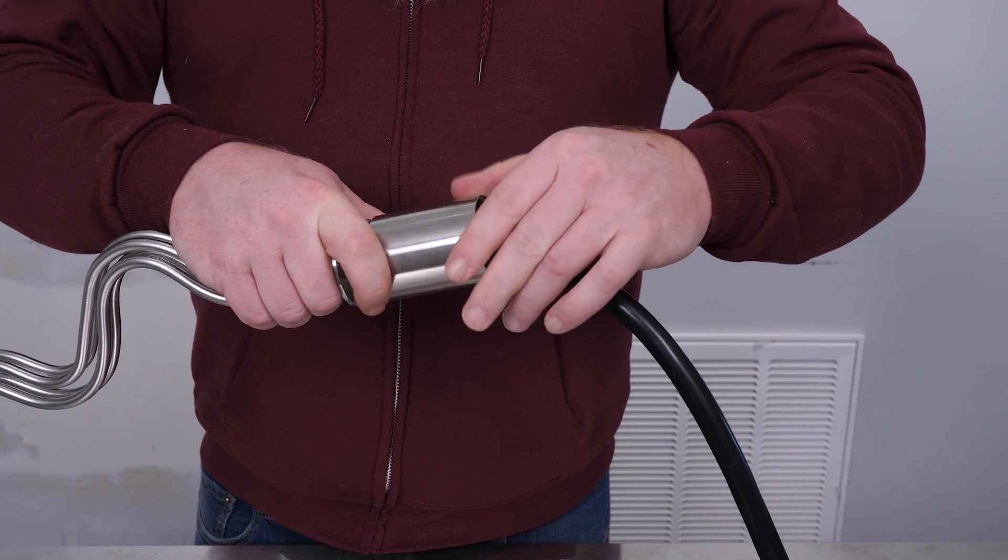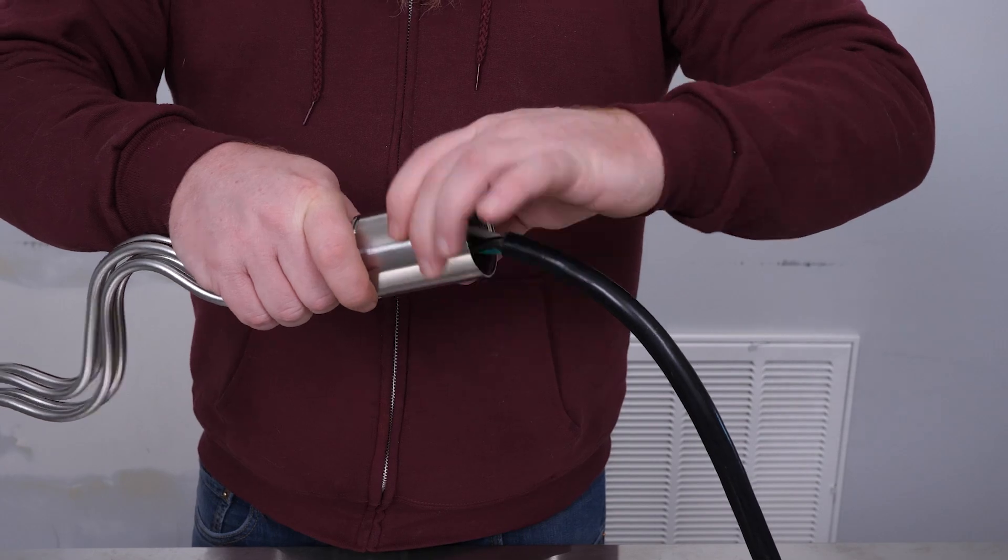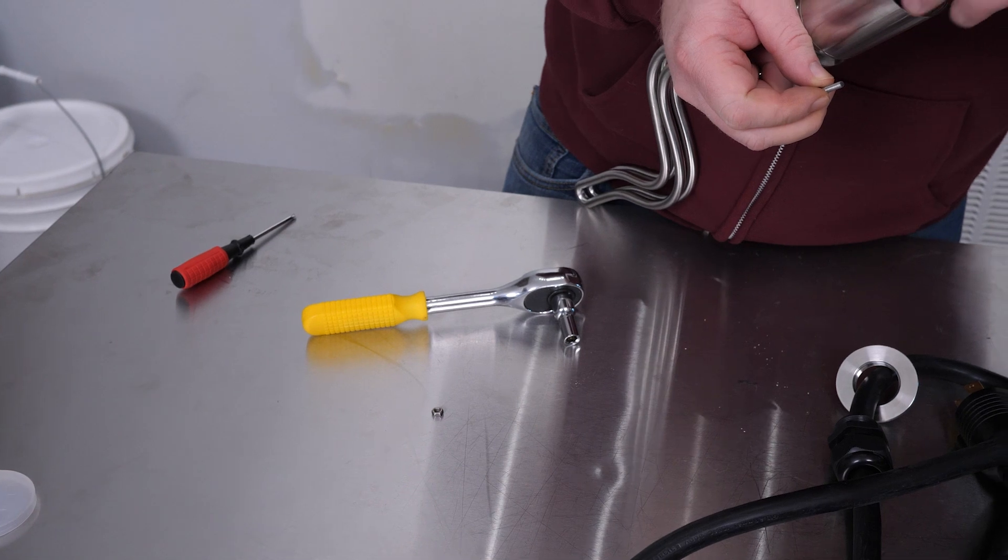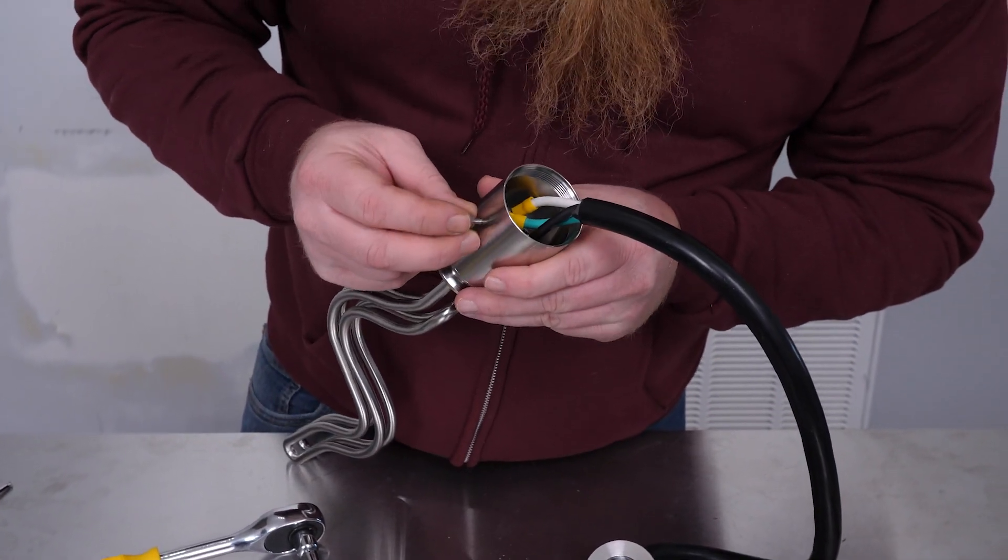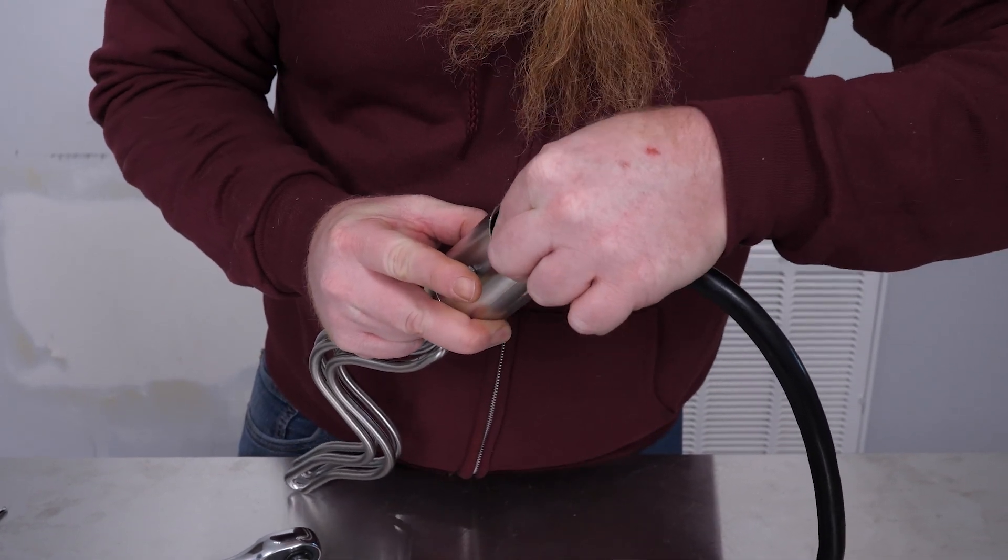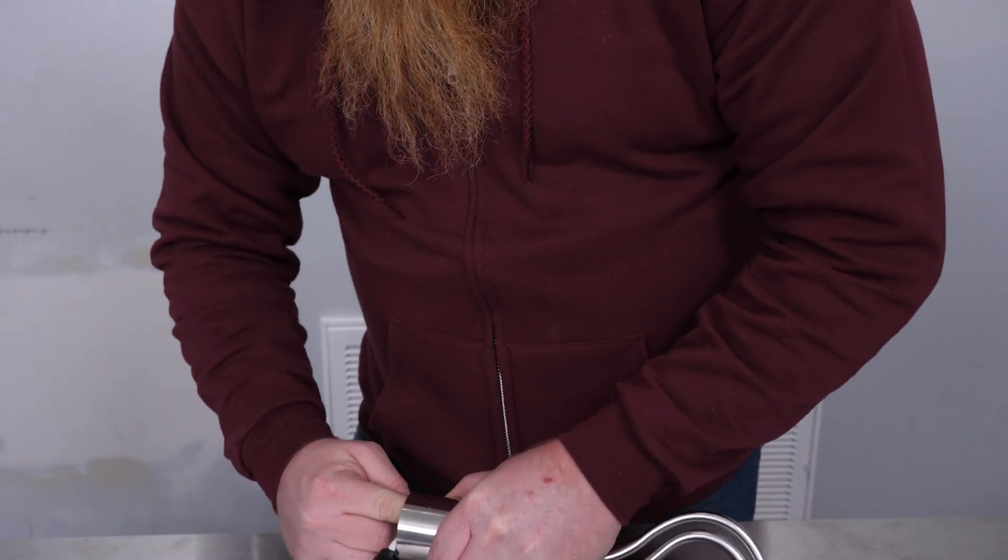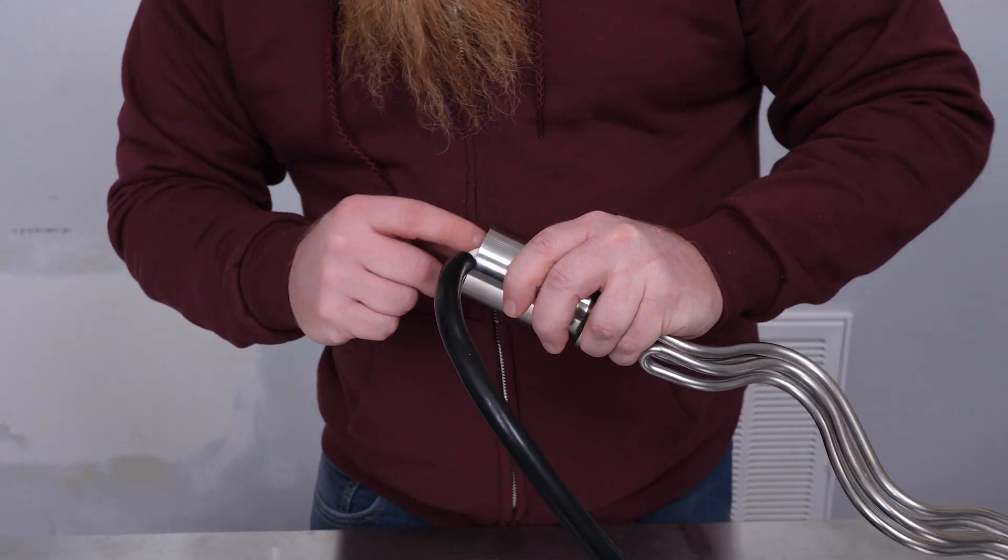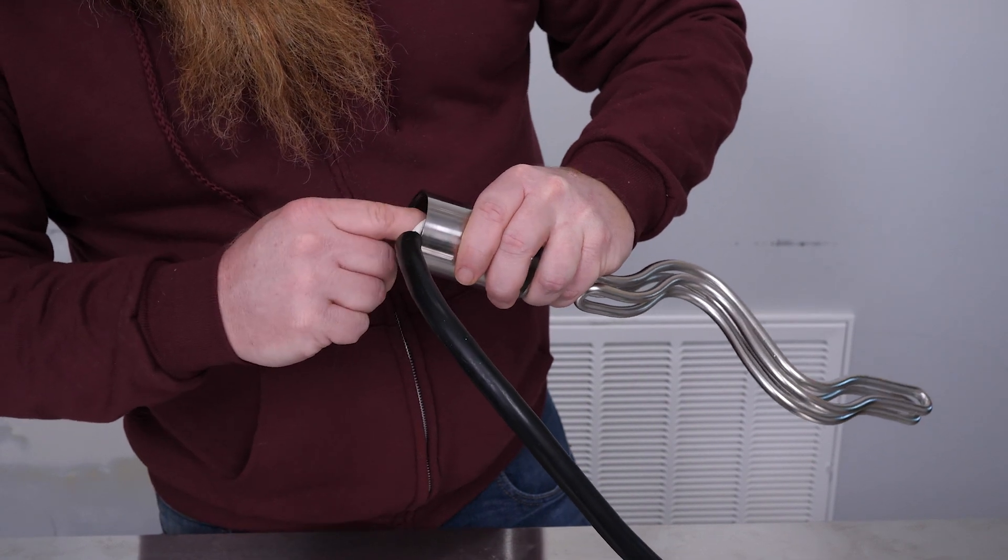Now screw on the sleeve. Take your lock washer, your screw, and your nut. Put your nut in the hole, then put the green ground wire onto the screw. Next comes the lock washer, and last is the nut.